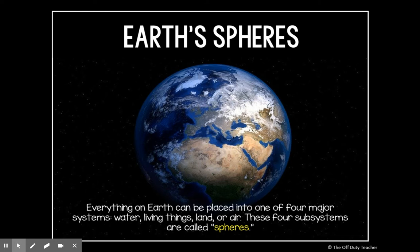The categories are for water, living things, land, or air. Each of these four subsystems has a special name. Those names are the geosphere, hydrosphere, atmosphere, and biosphere. We're going to learn a little bit about each of those spheres now.